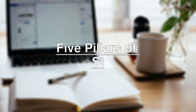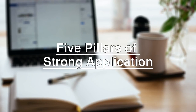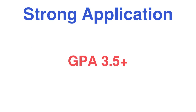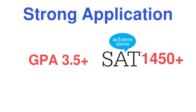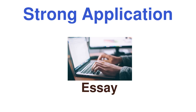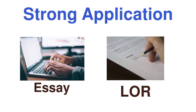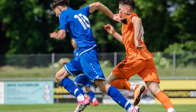Five Pillars of a Strong Application: For a strong application you will need a GPA greater than 3.5 and SAT scores above 1450, a unique and well-written essay on one of the Common App prompts, at least two letters of recommendation from a guidance counselor and a teacher, and ECAs that demonstrate your interest in the major you are applying to.